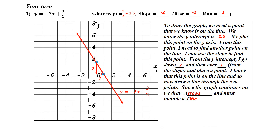Now, what happens if I wasn't able to go down? Since the slope itself is negative, I could also have gone up two — which is positive — and then gone over one in the negative direction, or minus one. Notice I would still be on the line.